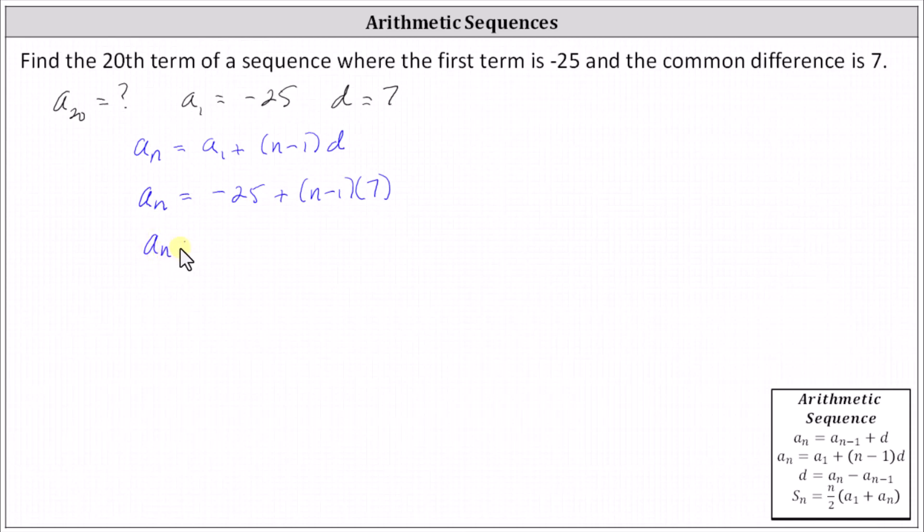We have a sub n equals negative 25, and then plus 7 times n which gives us plus 7n, and then plus 7 times negative 1, which is minus 7.